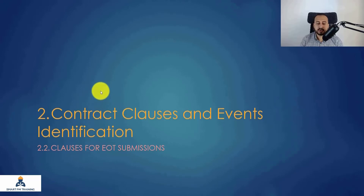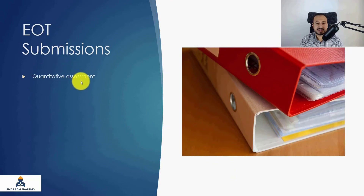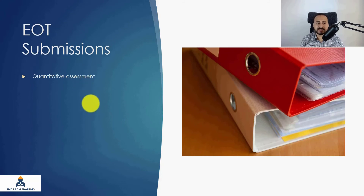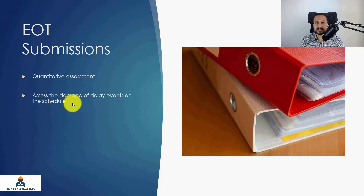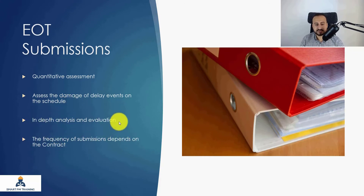In the last lecture we covered the clauses for notices of extension of time. Now we will talk about clauses for EOT submissions. Unlike the notice, the EOT submission itself is a quantitative assessment — you use Primavera, go through all activities in high detail, and at the end the submission gives you the proper entitlement. It assesses the damage of delay events on the schedule, giving you a clear understanding of how much delay each event is producing. It is an in-depth analysis and a large submission covering everything about what a certain event is doing to the project schedule.